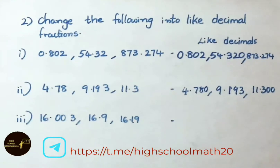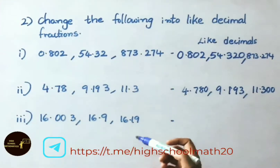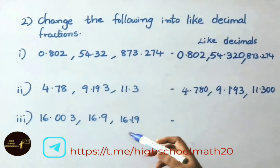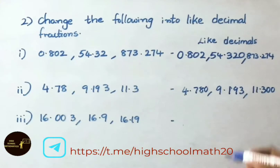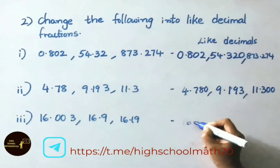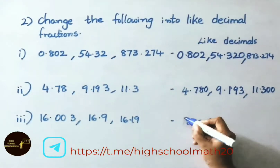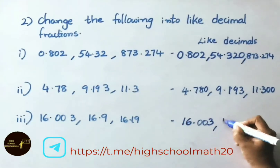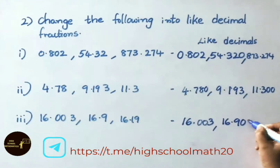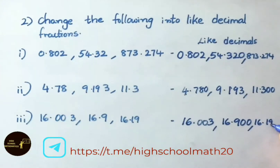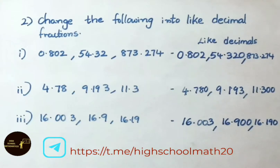See the third sum: 16.003, 16.10, and 16.193. Write the answer as: 16.003, 16.100, and 16.193. Here all three decimal fractions now have 3 decimal places, so they are converted to like decimals.